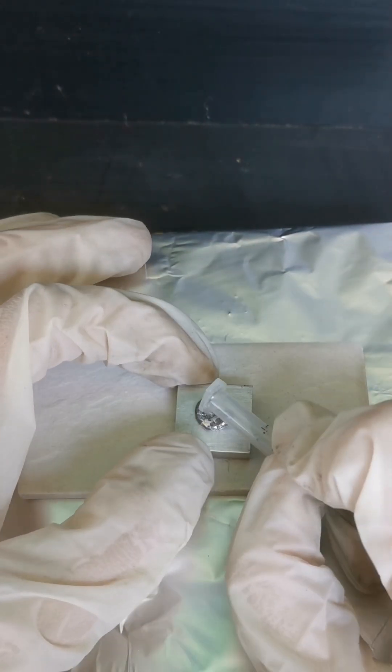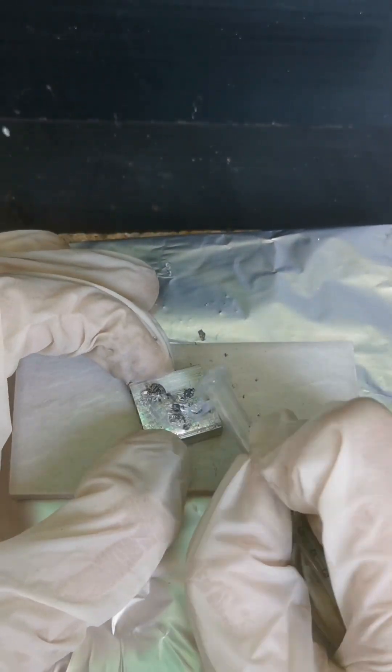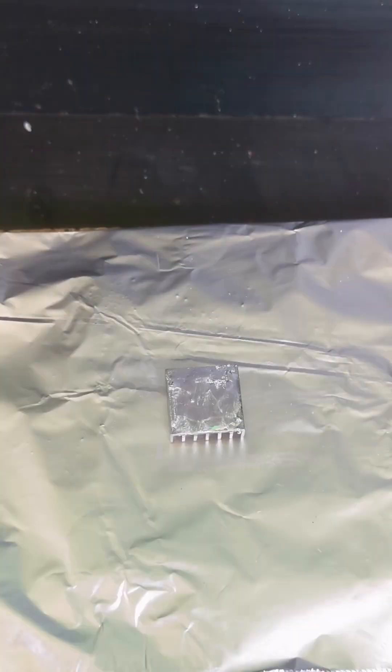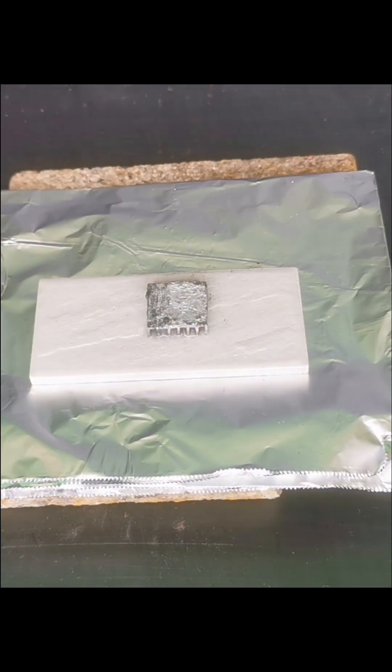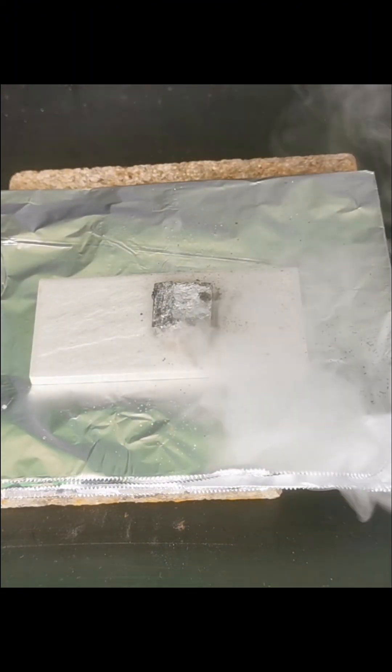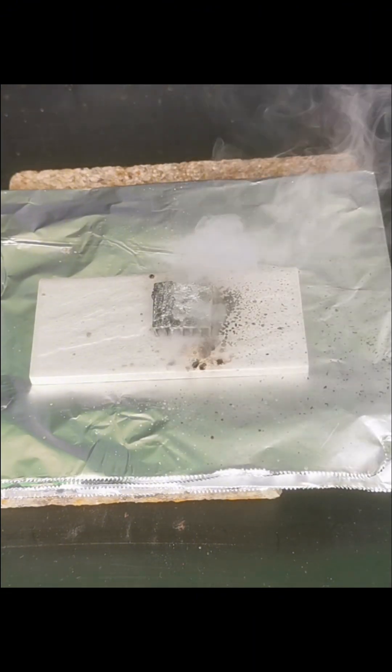I drip the gallium metal onto the aluminum heat sink and carefully apply it evenly. But nothing happened, so I add a bit of potassium permanganate. But still nothing happened.